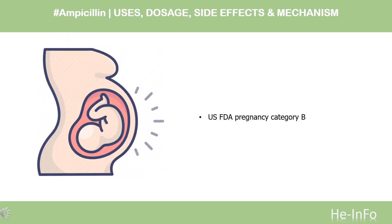Safety advice: U.S. FDA Pregnancy Category B. Animal reproduction studies have failed to demonstrate a risk to the fetus, and there are no adequate and well-controlled studies in pregnant women. This drug should be used during pregnancy only if clearly needed and the benefit outweighs the risk to the fetus.